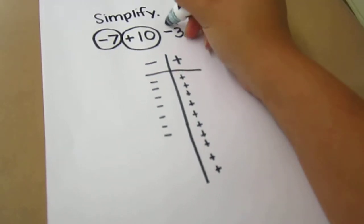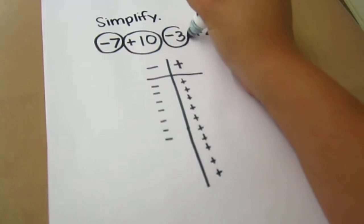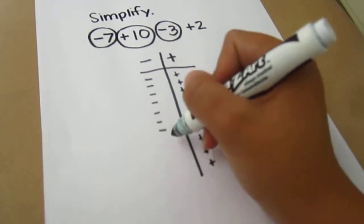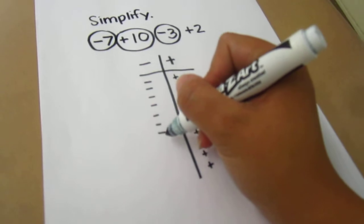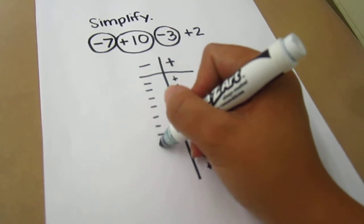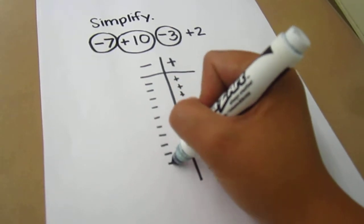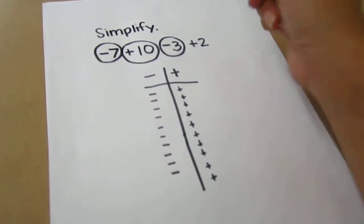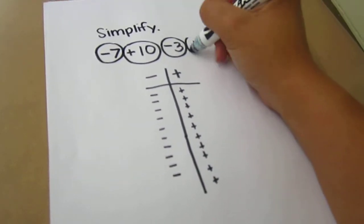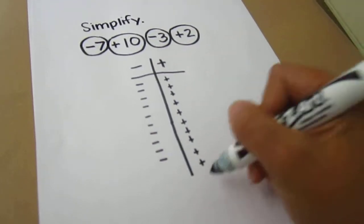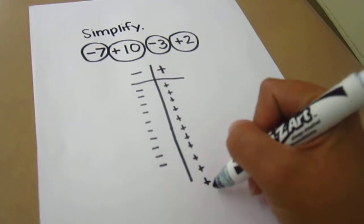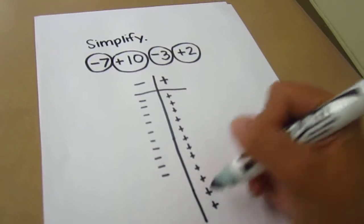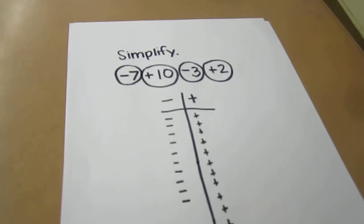My third term is negative 3, so on the negative side I'm going to go ahead and draw 3 additional negative signs. And lastly, I have positive 2, so for positive 2 I'm going to draw 2 additional positive signs.